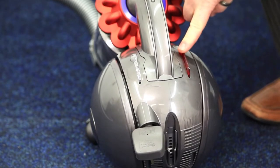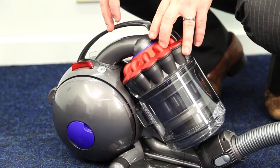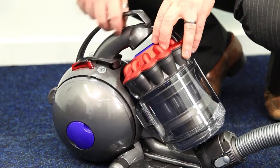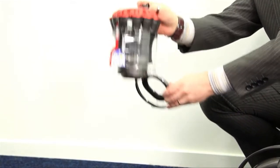It has an easy to access on and off switch and a coil rewind button. The clear bin is simple to remove using the quick release cyclone button and is easy and hygienic to empty.